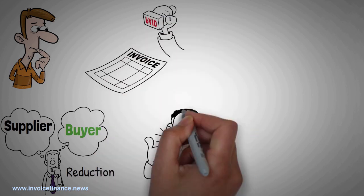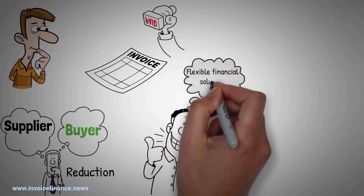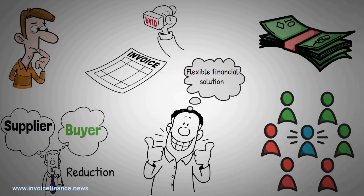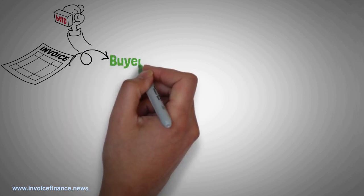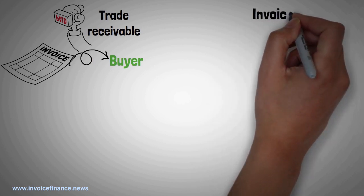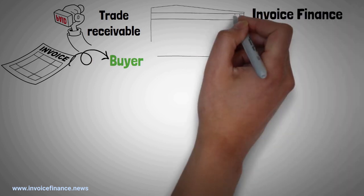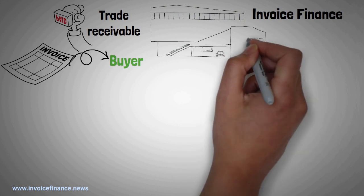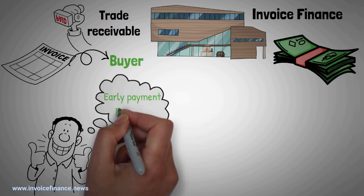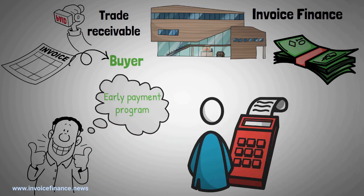However, both methods for early payment provide a flexible financial solution that can be used to manage cash flow and the demands of a supply chain. In summary, trade receivables are unpaid invoices. Goods or services are provided and an invoice is sent to the buyer. Until the invoice is paid, it remains a trade receivable. Trade receivables financing, also known as invoice finance, is when a company uses trade receivables to raise money. Alternatively, the buyer or seller can offer an early payment program to facilitate the quicker payment of trade receivables.